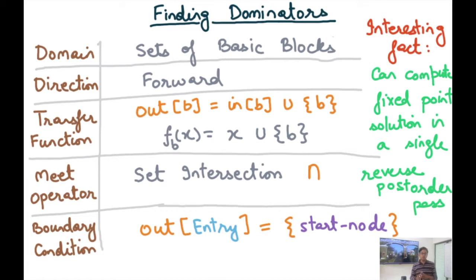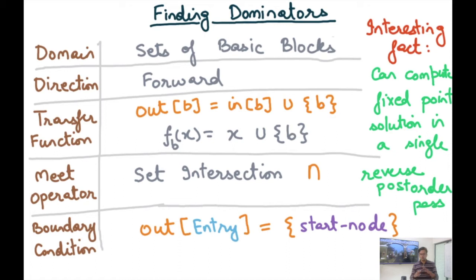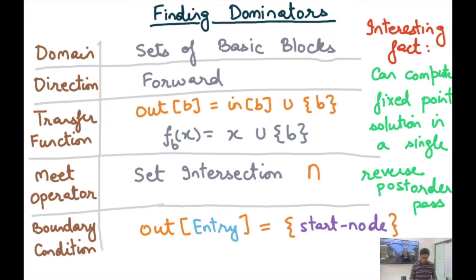That can be achieved if we do this iteration in a reverse post order manner. Recall that when we talked about DFA, we said the order can improve efficiency. If it's a forward data flow analysis, reverse post order is preferred. If it's a backward data flow analysis, post order is preferred. Some data flow analyses are guaranteed to finish in a single pass if done in the right order — forward in reverse post order, or backward in post order. In this particular case, we can compute the fixed point in a single reverse post order pass, and that's just because of how the transfer function is set up.